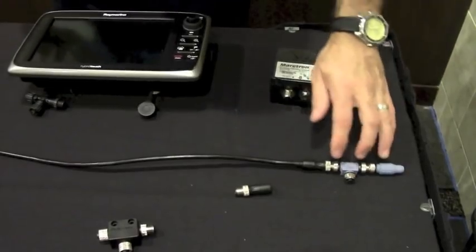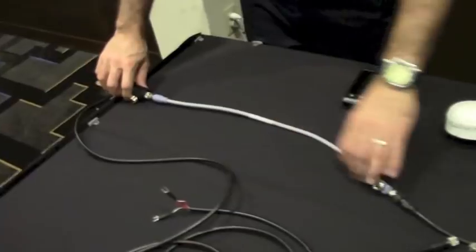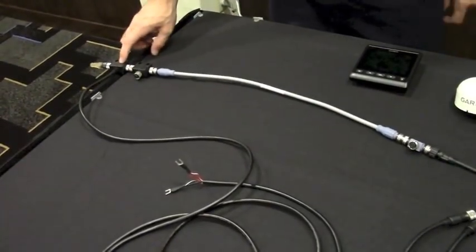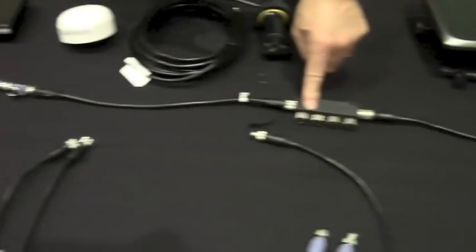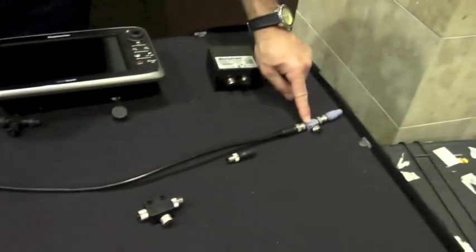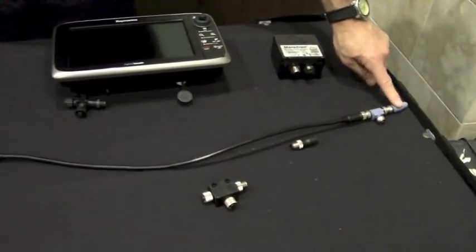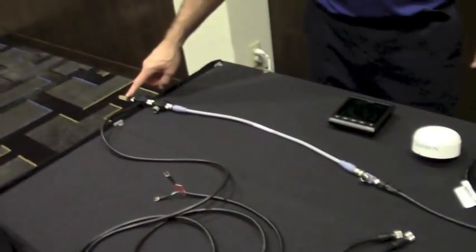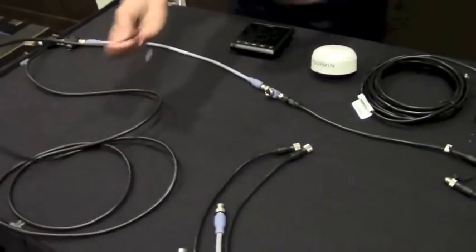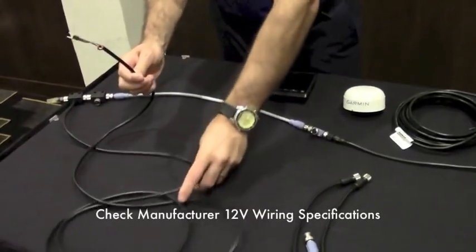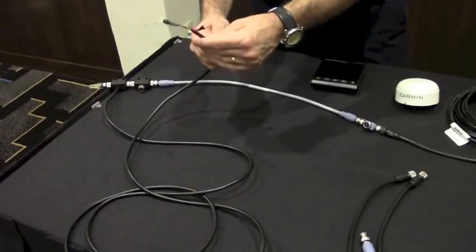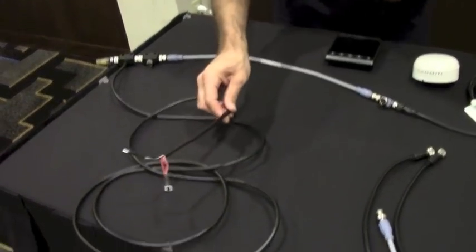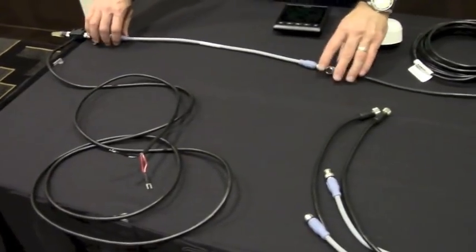So basically what I've done is we have our NMEA 2000 backbone. Envision this snaking through the boat. You may not see it. We have our power tee. We have some drop tees here that we will connect devices to. Here's the four-way single drop. And we have a termination resistor on this end of the network. We have a termination resistor on this end of the network. This is where we're going to connect to 12 volts. And remember, different manufacturers, the wiring colors are different. So check the specifications and check the wiring colors for positive and negative 12 volts.